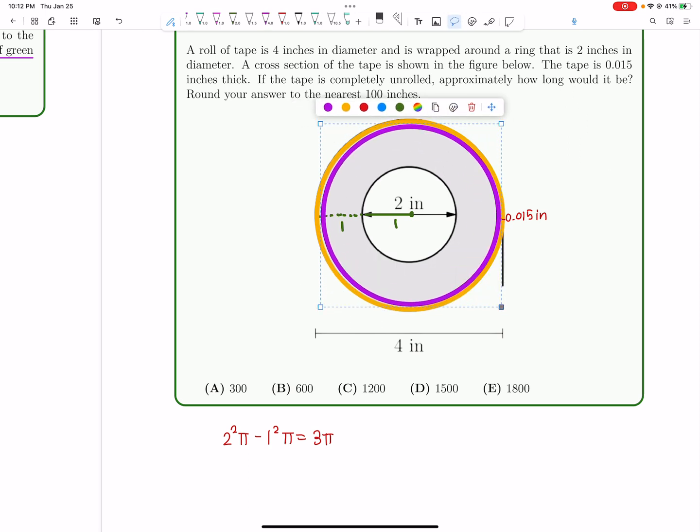This would be like the second layer of tape, right? We have the first layer of tape that's shown in yellow, and this is our second layer of tape, which also has a width of 0.015 inches.